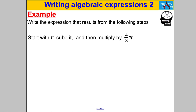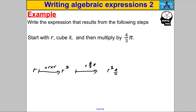Last one: start with R, cube it — multiply it by itself three times — to get R cubed. Then multiply by four thirds pi. You could write R cubed four thirds pi, but that's messy. We write the number first, then pi (no powers), then R cubed last: four thirds pi R cubed. And that's it for this video on writing more complicated algebraic expressions — thanks for watching.